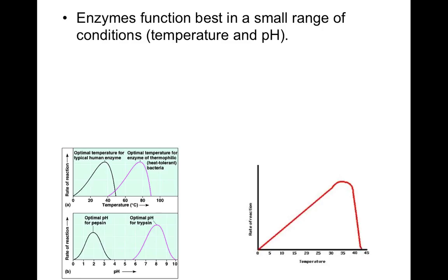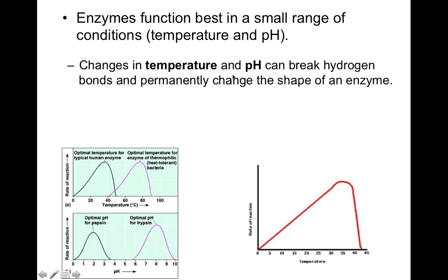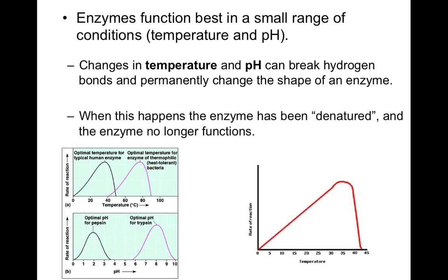Alright, so enzymes function best in a small range of conditions. Make sure that you have that written down. So, let's take a look at this graph over here. Let's also get everything written down. So, changes in temperature and pH can break hydrogen bonds. The hydrogen bonds are what's going to give that protein its shape. So, if we're breaking hydrogen bonds, then it's going to change the shape of an enzyme. And that's not good, because then it won't work. Because we just looked at the lock and key model. You need to have the right shape. When this happens, we say that the enzyme has been denatured, and the enzyme no longer functions. Alright, so if the enzyme's been denatured, it doesn't have the right shape, it's not going to work very well.